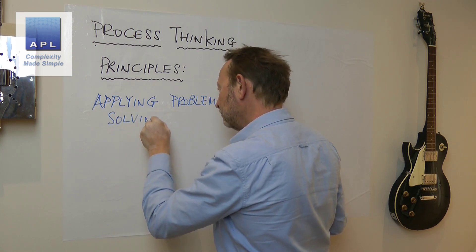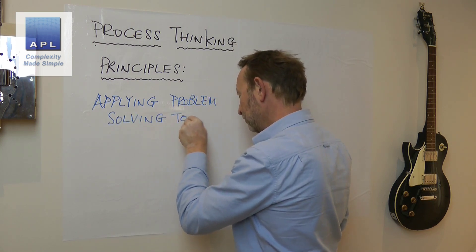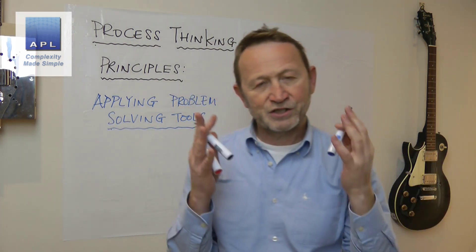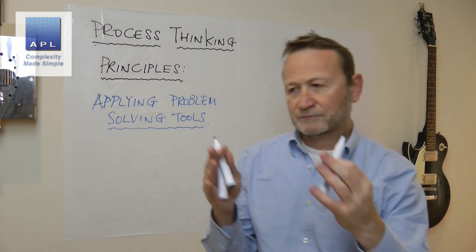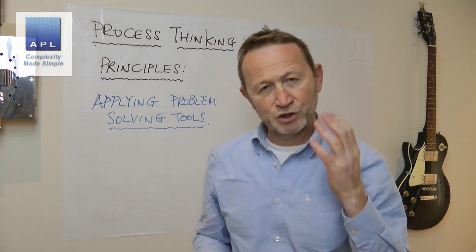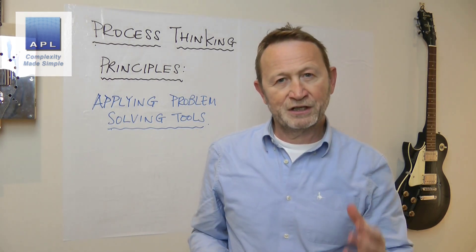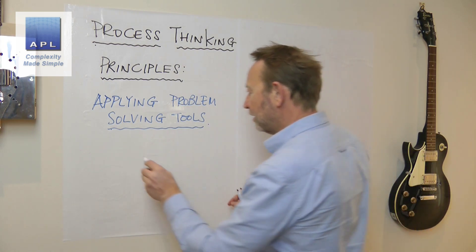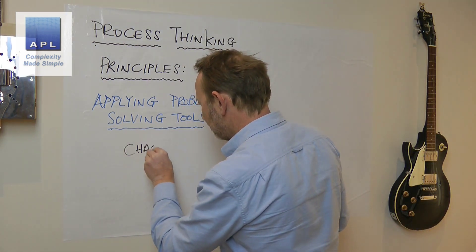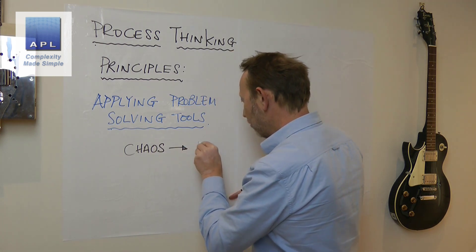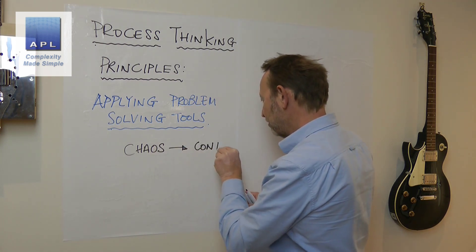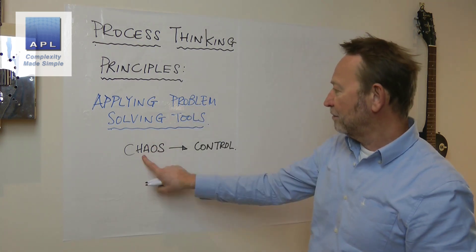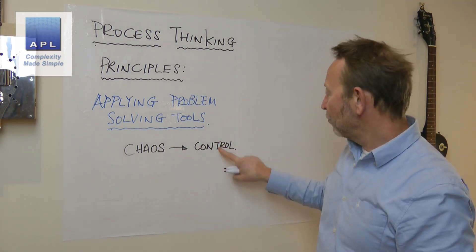So: process thinking principles — applying problem solving tools. It's this simple principle: when you have a problem and you want to try and fix it, there's a question that you have to ask — this simple question: is my process in a state of chaos or is it in a state of control?